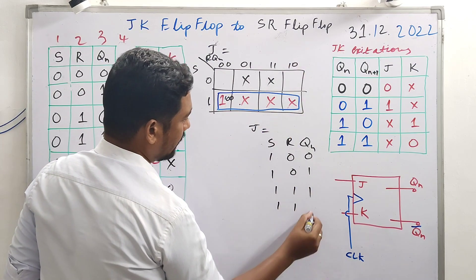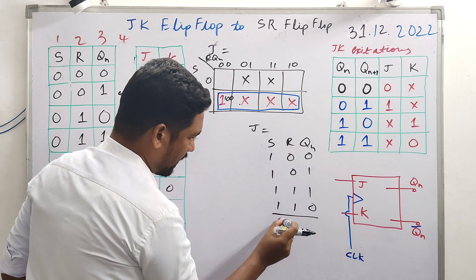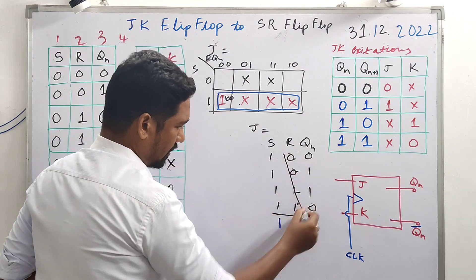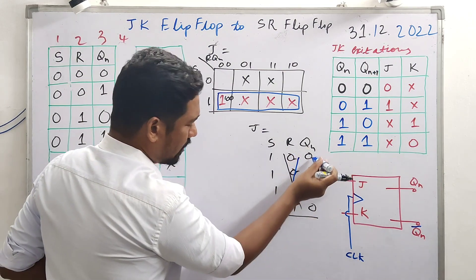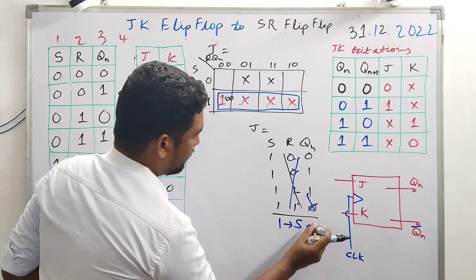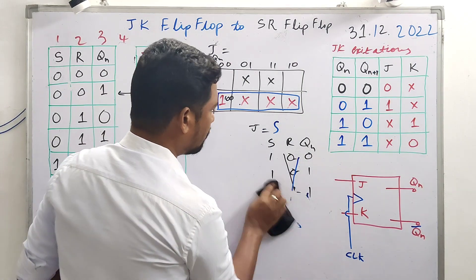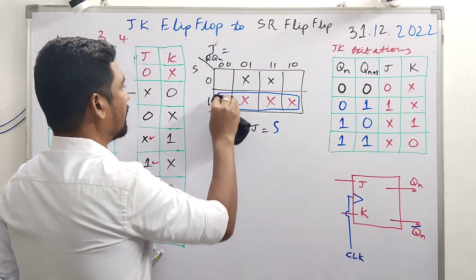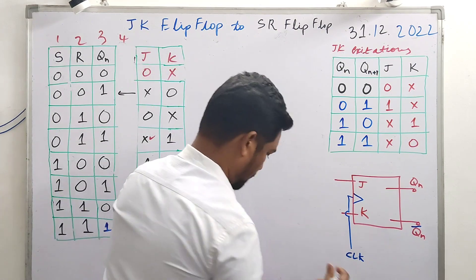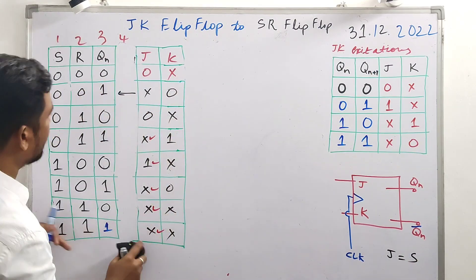Analyzing the K-map for J: the cells 0,0,0 - zero; 1,0,0 gives 1; 1,0,1 and 1,1,1 and 1,1,0 - one term remains constant throughout. S remains constant as 1 in these combinations, while R changes. This means S alone determines J. Therefore, J = S.